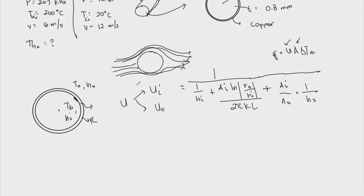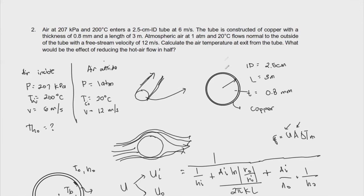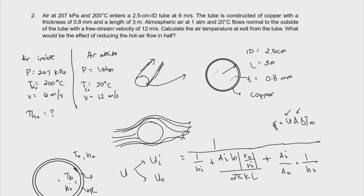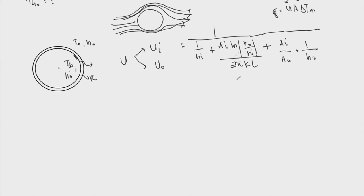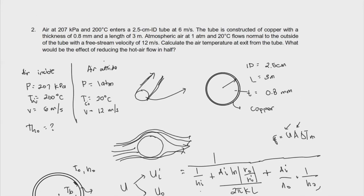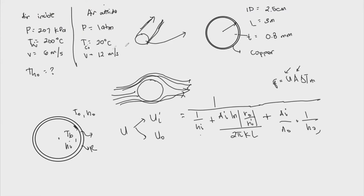So with that, let's first try to evaluate our U, and then we'll address the rest once we obtain U. So knowing U, we have a lot of computations to do. We need to find HI and then HO based on our conditions right here.